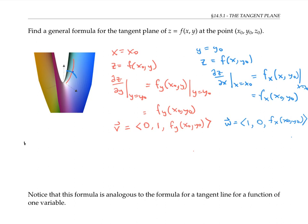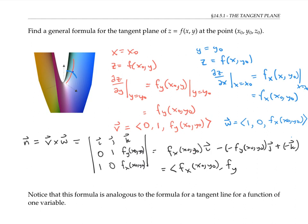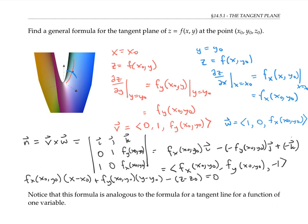As before, we can find the normal vector to the tangent plane by taking the cross product of our two tangent vectors. Expanding the determinant, I get f sub x at (x₀, y₀) times i, minus negative f sub y at (x₀, y₀) times j, plus negative k. That can be rewritten as the vector with components (f sub x, f sub y, −1). Since the tangent plane goes through the point (x₀, y₀, z₀), the equation of the tangent plane — more typically written by moving z minus z₀ to the other side — is: z minus z₀ equals f sub x times (x minus x₀) plus f sub y times (y minus y₀), where f sub x and f sub y are evaluated at (x₀, y₀).